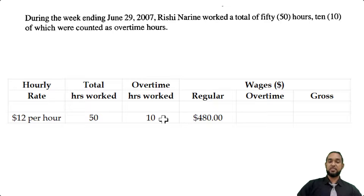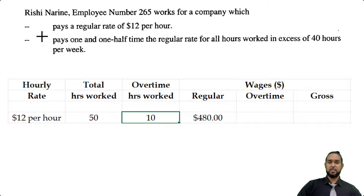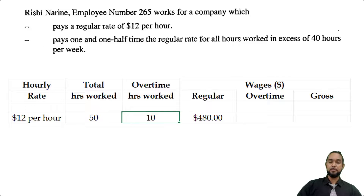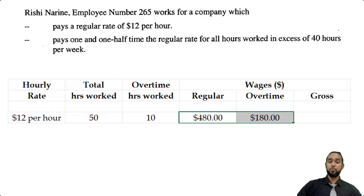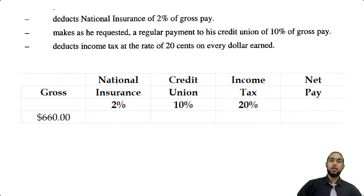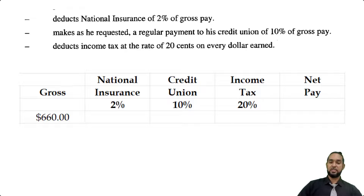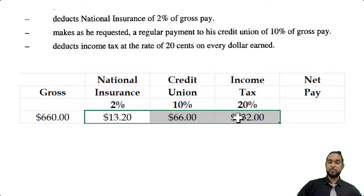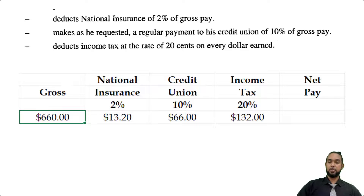Adding regular pay and overtime gives us gross wages. National insurance is 2% of gross pay, credit union fees are 10%, and income tax is 20% on every dollar earned. To find net pay, we add those deduction items and subtract from gross pay, giving us a net pay of $448.80.